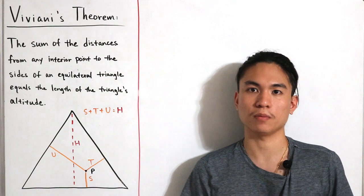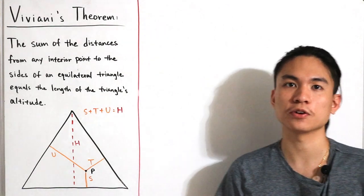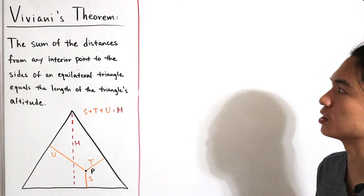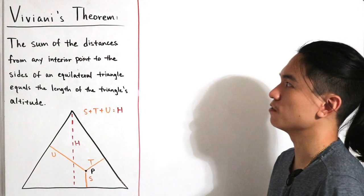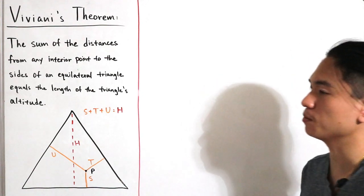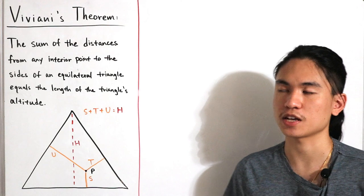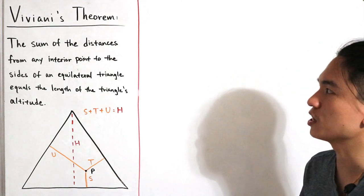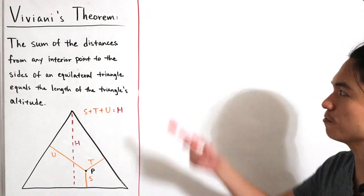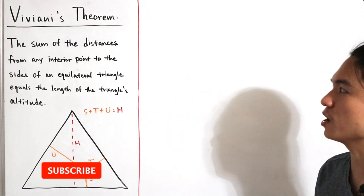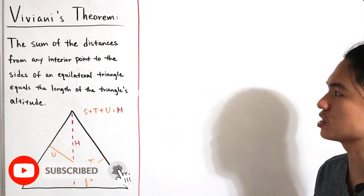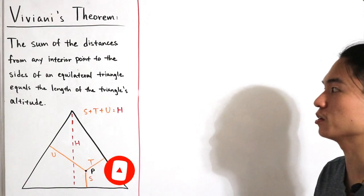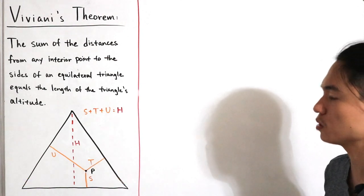Welcome back to another video. Today we have a geometry theorem known as Viviani's theorem, named after the Italian mathematician Vincenzo Viviani. The theorem states that the sum of the distances from any interior point to the sides of an equilateral triangle equals the length of the triangle's altitude.